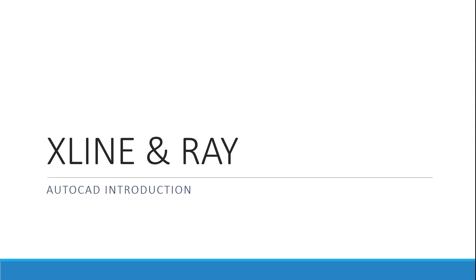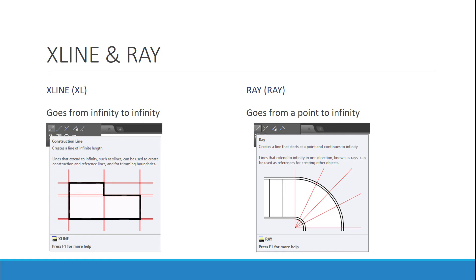When creating projections, you're going to use the X line — short for construction line — or you can use a ray. They work absolutely the same, except the X line goes from infinity to infinity, and the ray command goes from one point to infinity. Also remember that once you create these objects on your screen, they're not just references — they're actually part of your drawing. So you can trim and modify these lines. Nodes, on the other hand, are just reference points and you can only delete them.